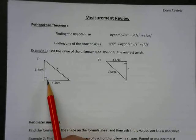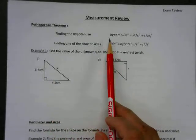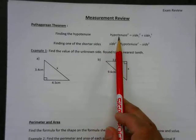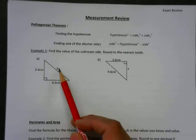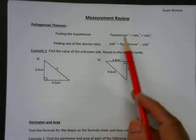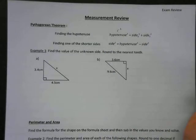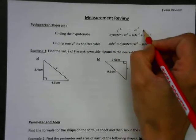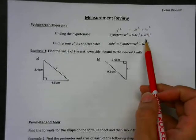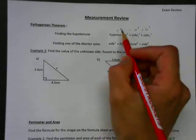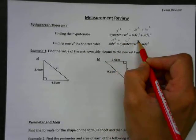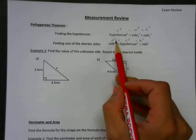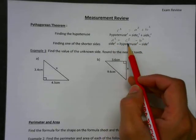This refers to 90 degrees. We have to know which side is the hypotenuse — it's always the longest side, and it's always across from the 90 degrees. So here in this case, x would be the hypotenuse side. We define the hypotenuse as c squared, and the other two sides as a and b.